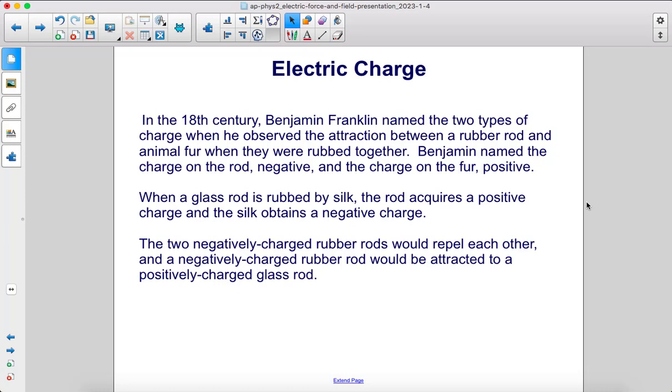Benjamin named the charge on the rod negative and the charge on the fur positive. When a glass rod is rubbed by silk, the rod acquires a positive charge and the silk obtains a negative charge.